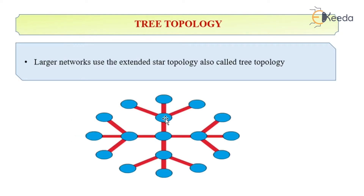Tree topology. In this topology, there is an extension of the star topology. There is a central node, and connected to that is another node, and then we have a tree topology. So tree topology is also called the extended star topology.